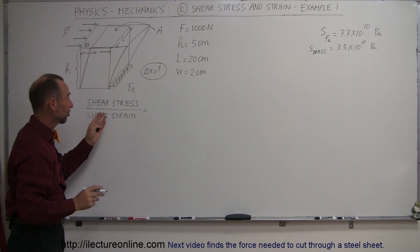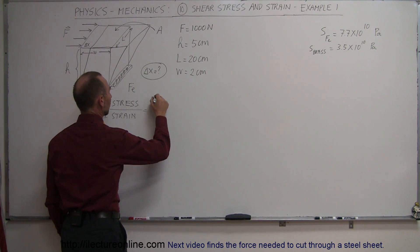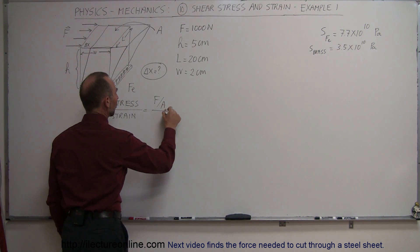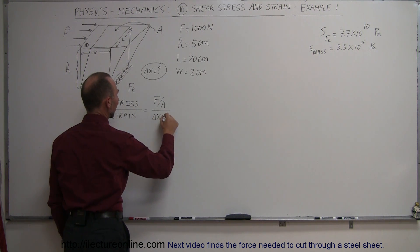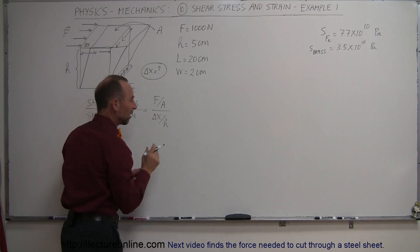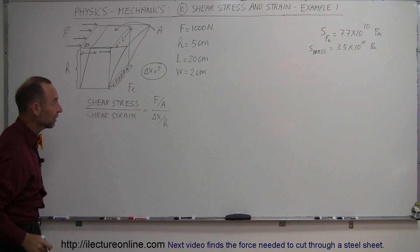Is equal to—now of course, stress units always are, or the formula always is, force over area—and shear strain would be delta x divided by the height, the ratio of how much it deforms divided by the height given there.